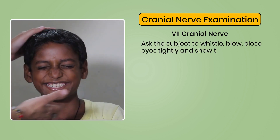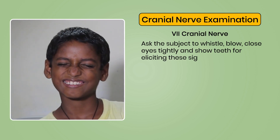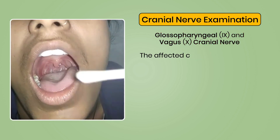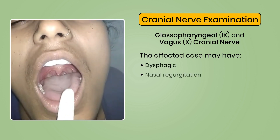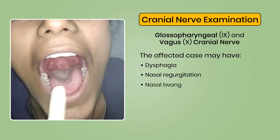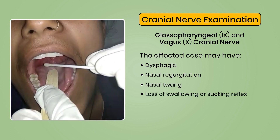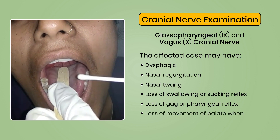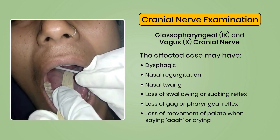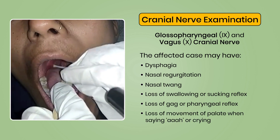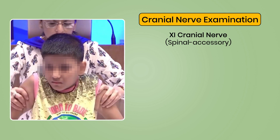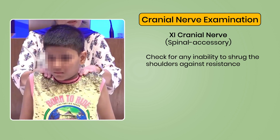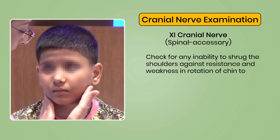Glossopharyngeal and vagus cranial nerves: the affected child may have dysphagia, nasal regurgitation, nasal twang, loss of swallowing or sucking reflex, loss of gag or pharyngeal reflex, and loss of movement of palate when saying 'aaaah' or crying. Eleventh cranial nerve or spinal accessory: check for any inability to shrug the shoulders against resistance and weakness in rotation of the chin to the opposite side.